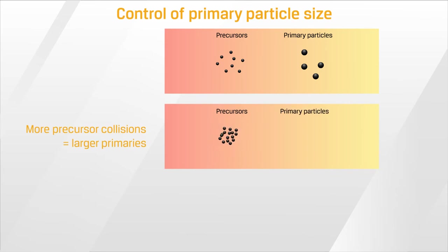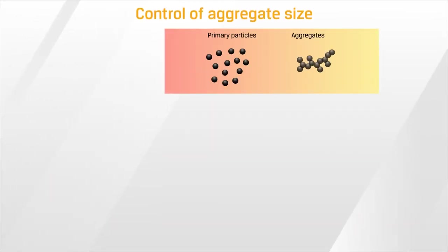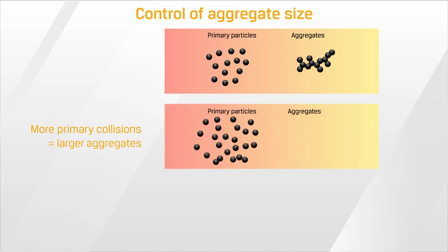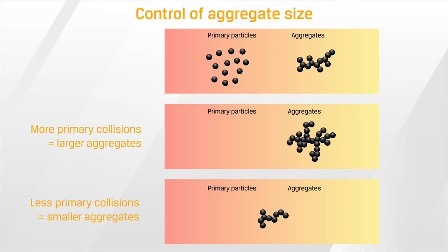More precursor collisions equal larger primaries. Less precursor collisions equal smaller primaries. Primaries then collide with each other, bonding to form a cluster of particles called an aggregate. Cabot controls these collisions too—more primary collisions equal larger aggregates, less primary collisions equal smaller aggregates.